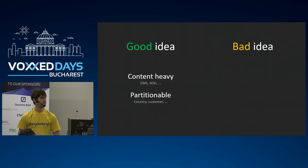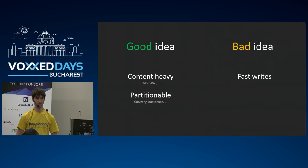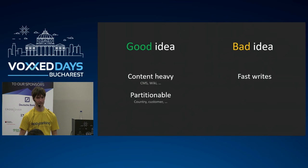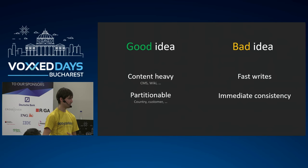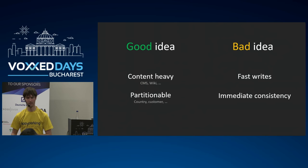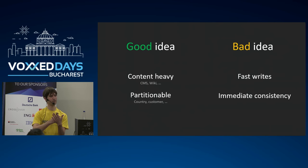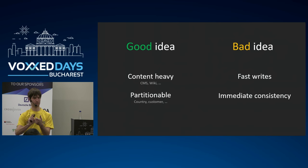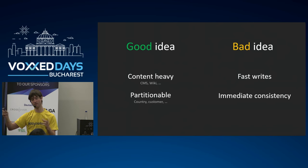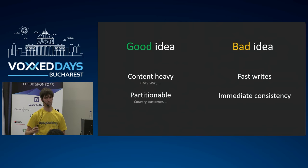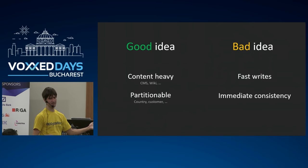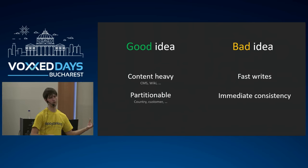When should you not use this? When you need fast writes and your data is not partitionable — if you need 5,000 writes per second, don't use this because it won't scale to that. Another problem is immediate consistency. If you want to do queries, you'll have to denormalize into a read store, and when you do a commit it typically takes about half a second to a second before those changes are replicated in your data store. So you do have eventual consistency. If you use Git as your primary data source, you won't have immediate consistency.